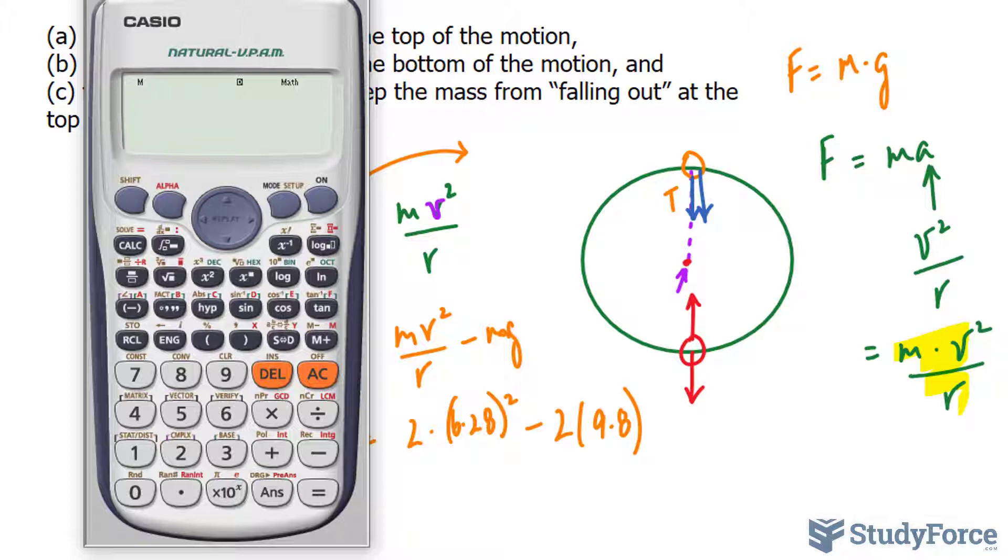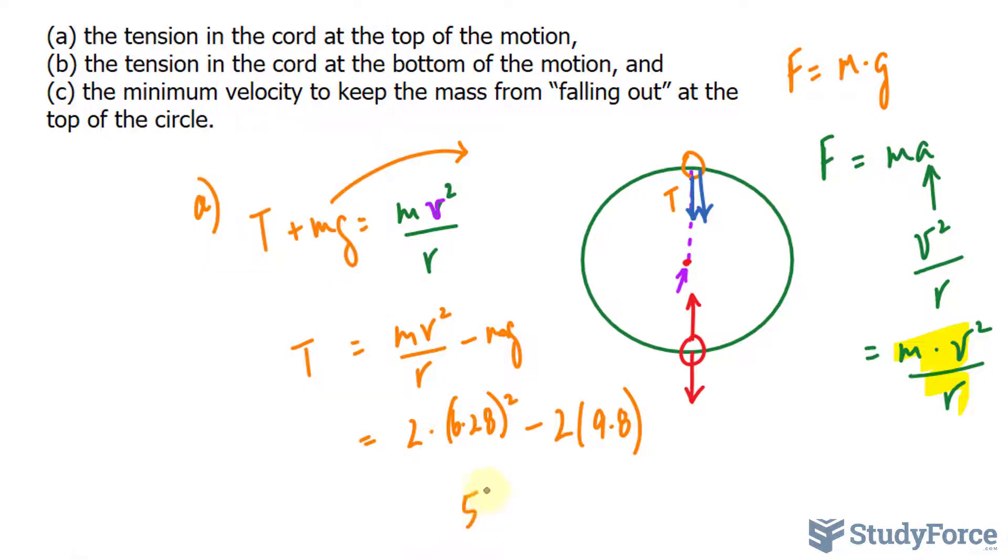So let's substitute that into our calculator, and we should get the tension in newtons. So 2 times 6.28 raised to the power of 2 minus 2 bracket 9.8, and that gives us 59.27. So you can round this to two numbers after the decimal place to take into account the correct number of significant figures. And if we do that, you should write down 59.28 newtons.